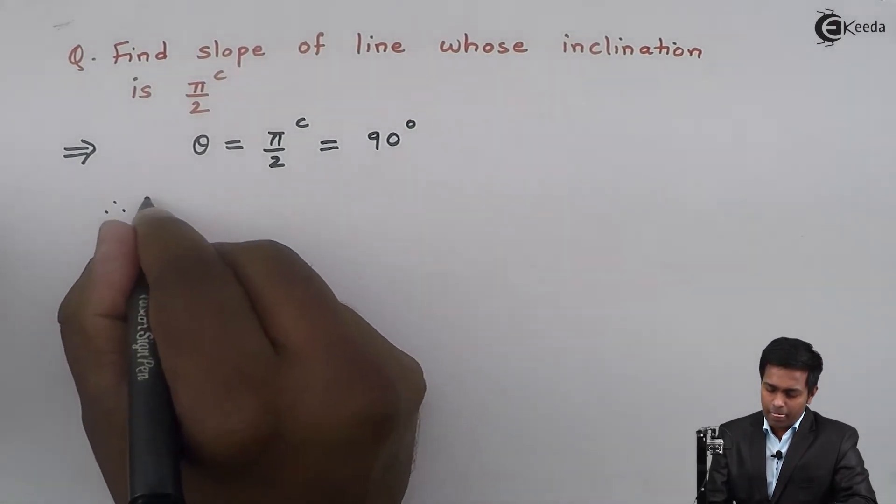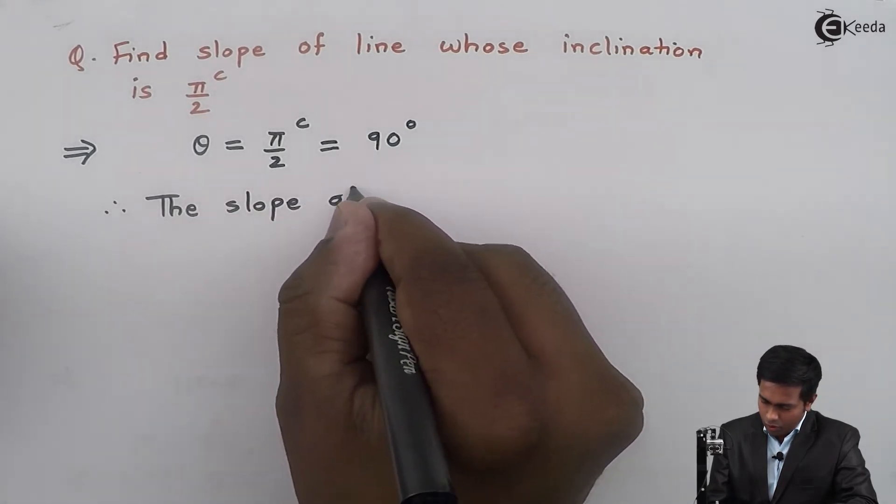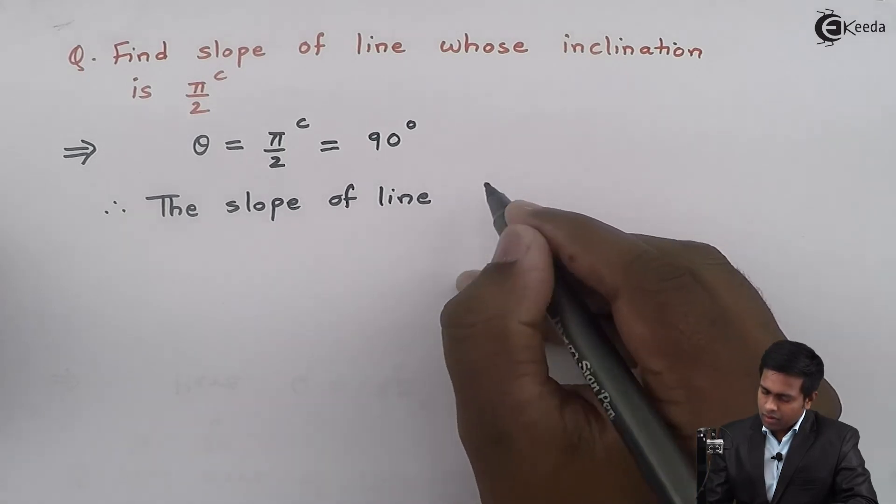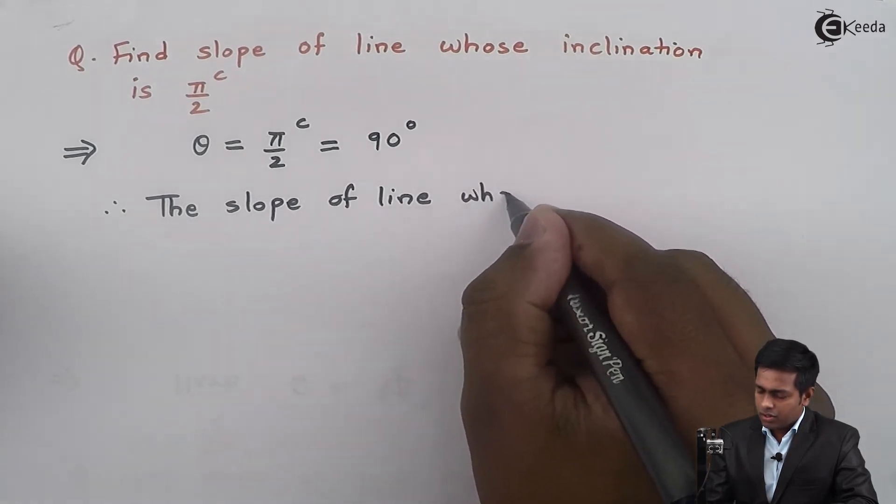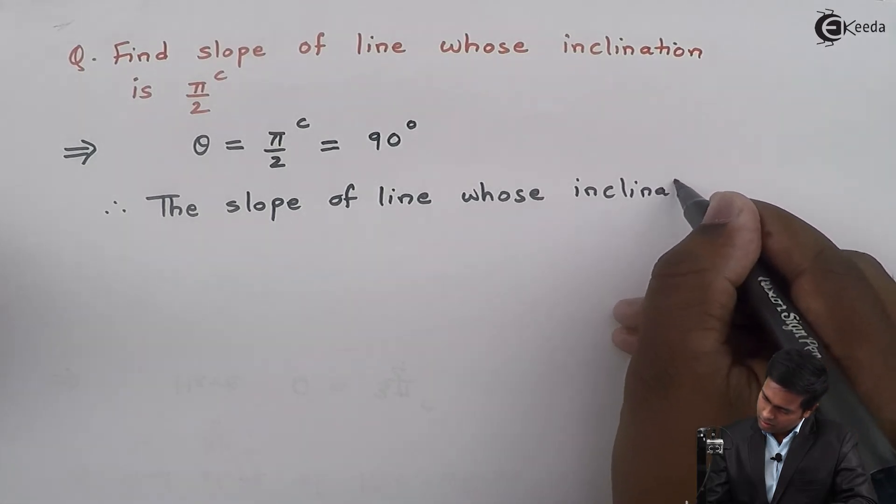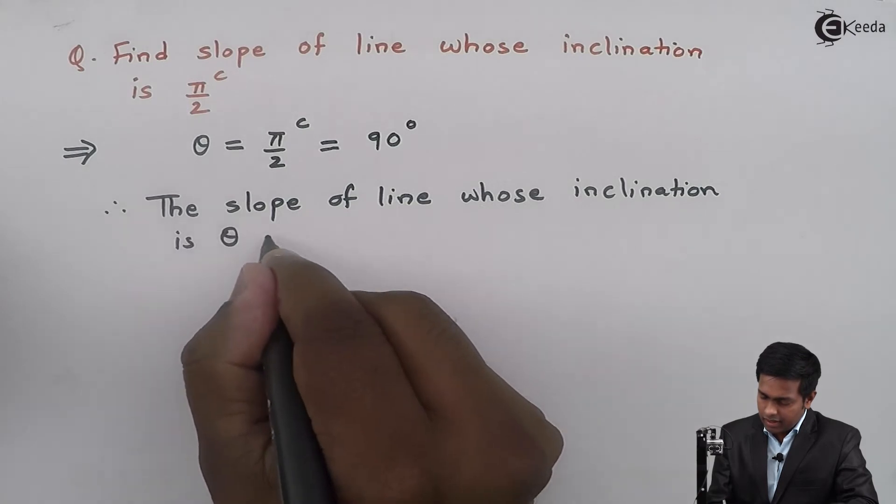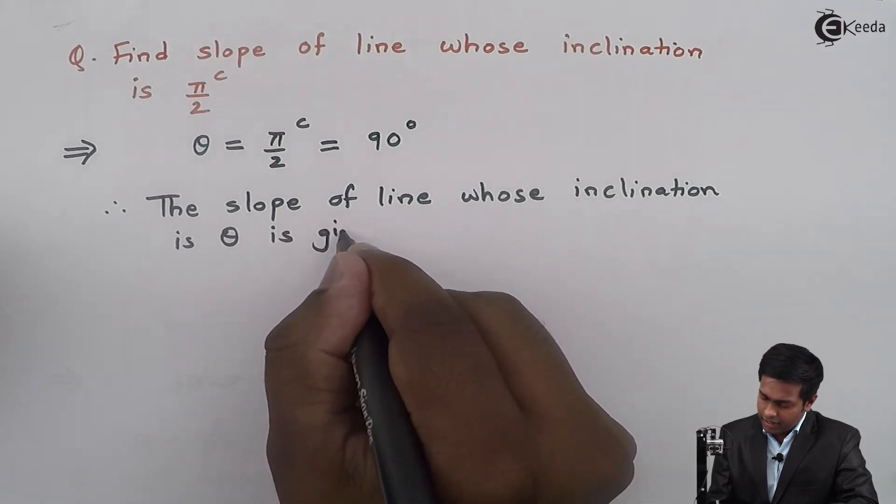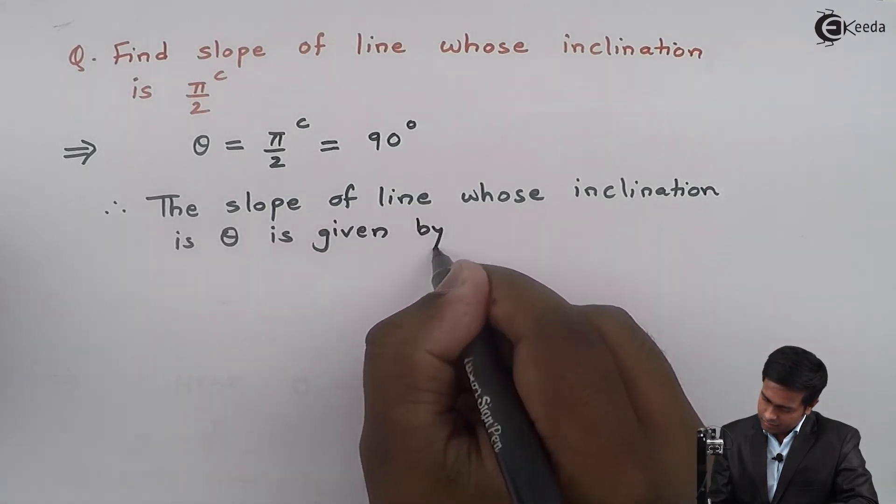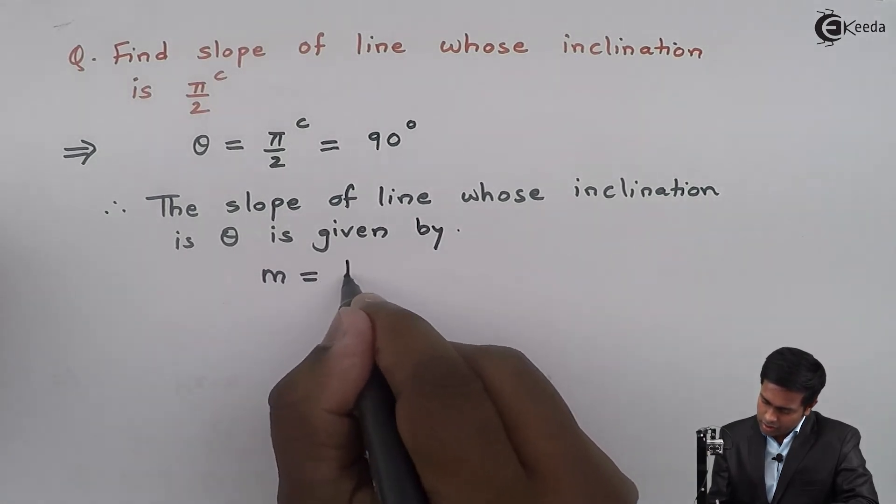Therefore, the slope of a line whose inclination is theta is given by m = tan θ.